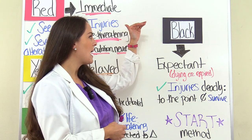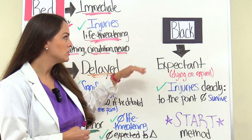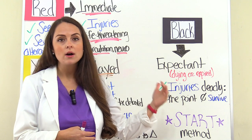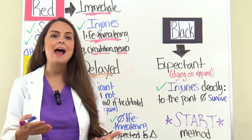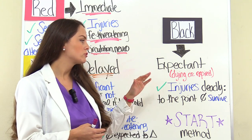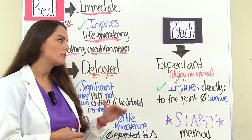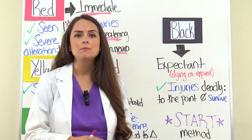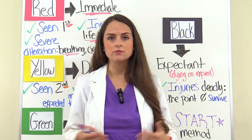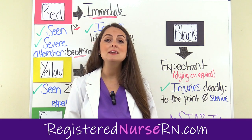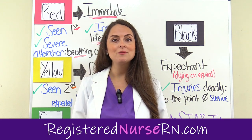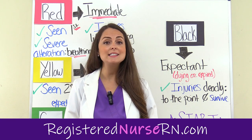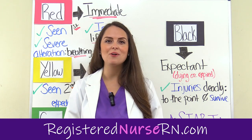Lastly, we have the tag color black. Patients tagged black are considered expectant — they are in the process of dying or have already died, and their injuries are so deadly that they are not going to survive. You're going to see the absence of breathing, circulation, and neuro or mental status. That wraps up this review of the color-coded TAG system used in disaster triage. Don't forget to access the free quiz that will test you on this content.